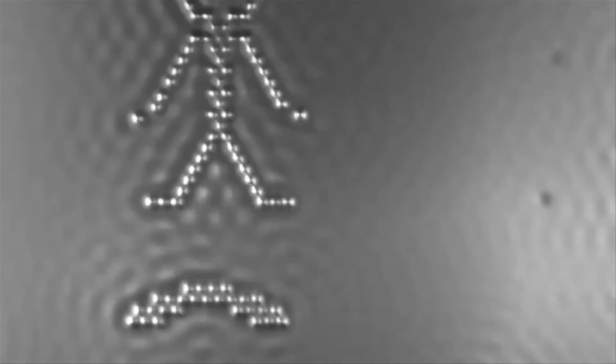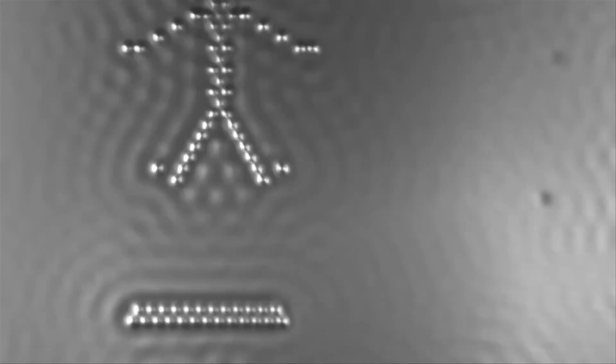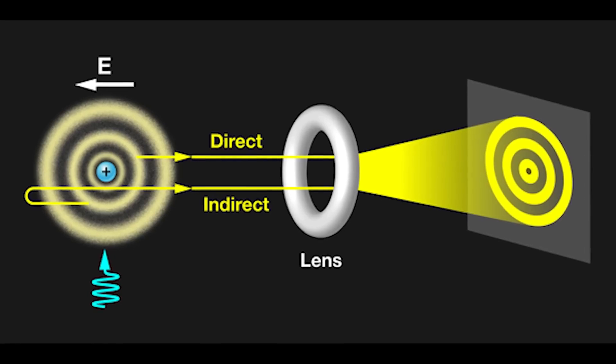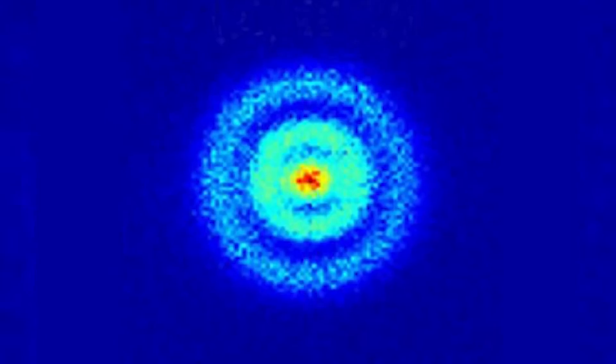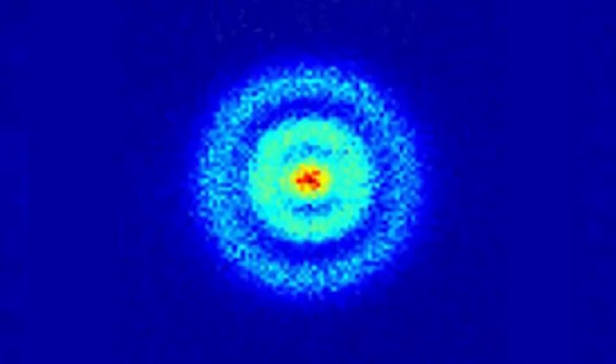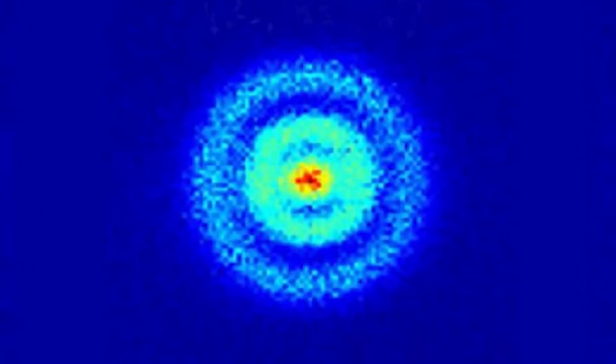Until very recently, this type of image was the best we could do to see atoms. Until physicist Aneta Stodolna found a clever way to photograph the shadow cast by the hydrogen wave function. And here's what she got. This kind of grainy spot is absolutely fascinating. This is the first so-called direct observation of the inside of an atom. More precisely, it shows us the distribution in space of the wave function of the electron in a hydrogen atom.